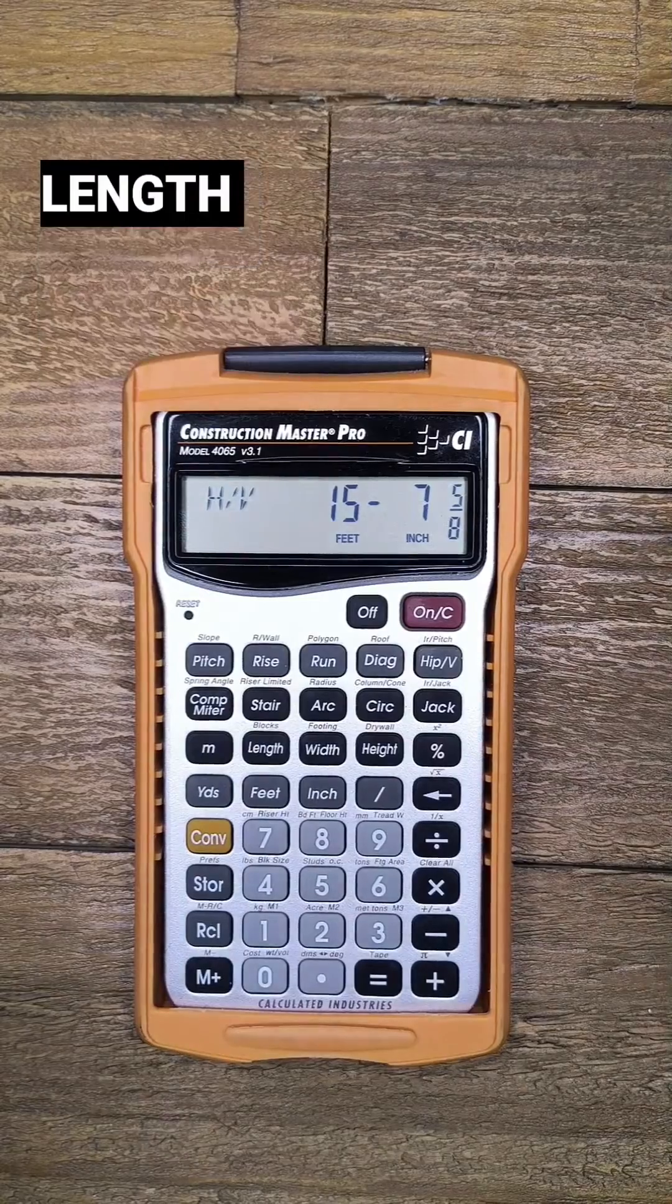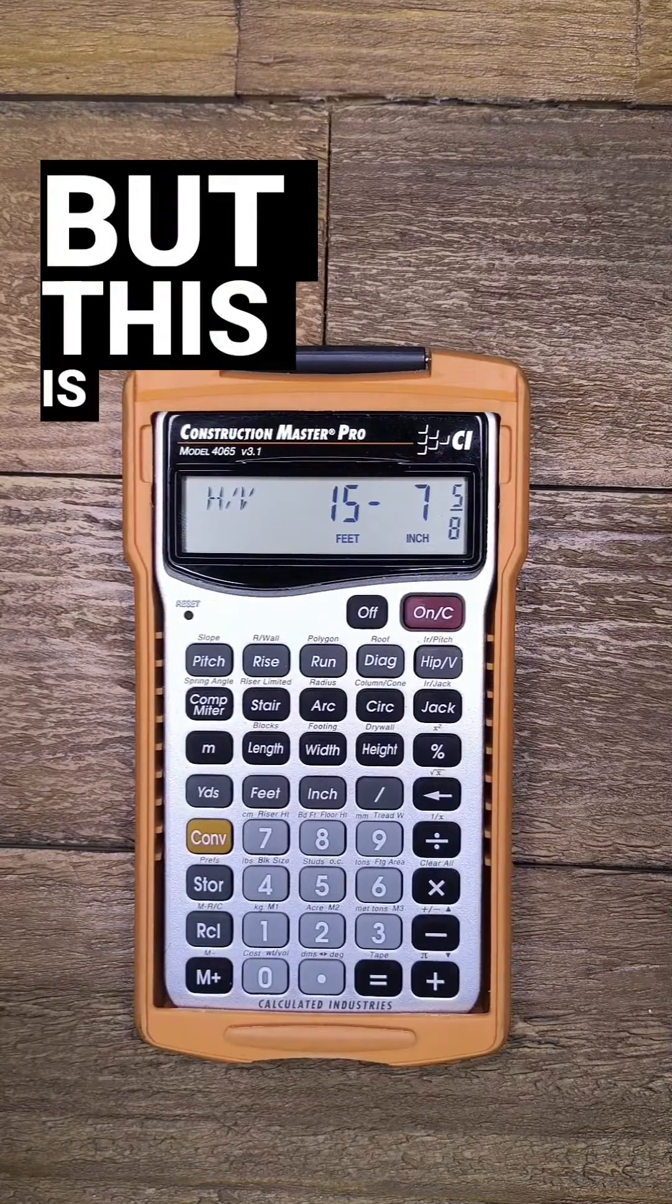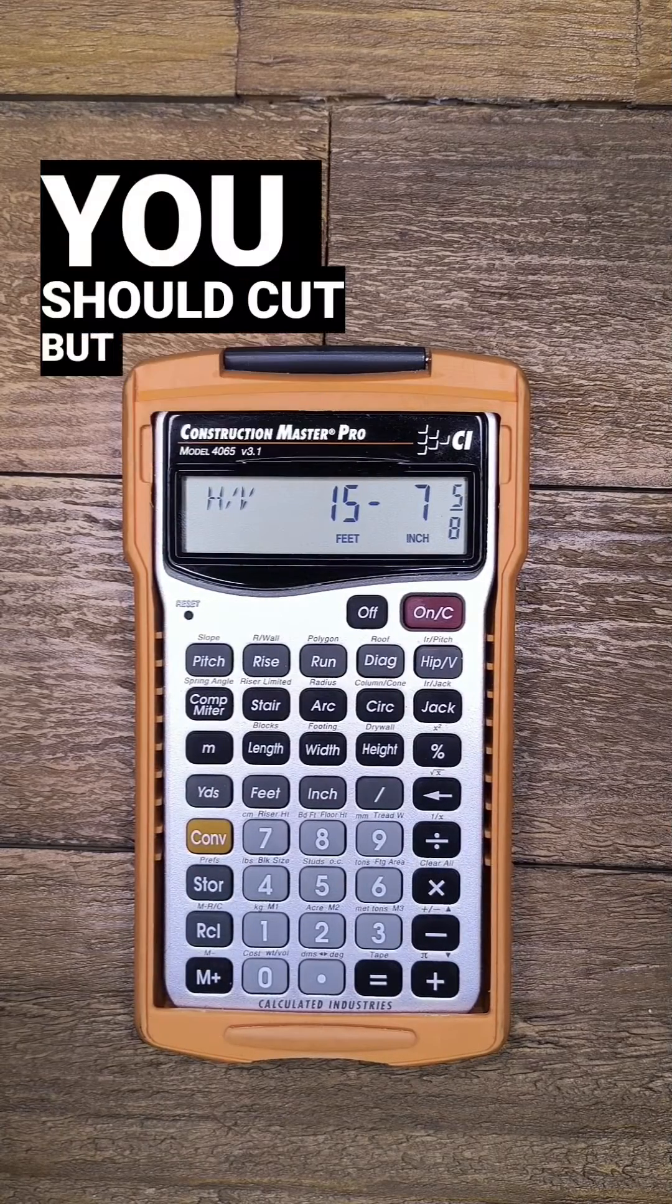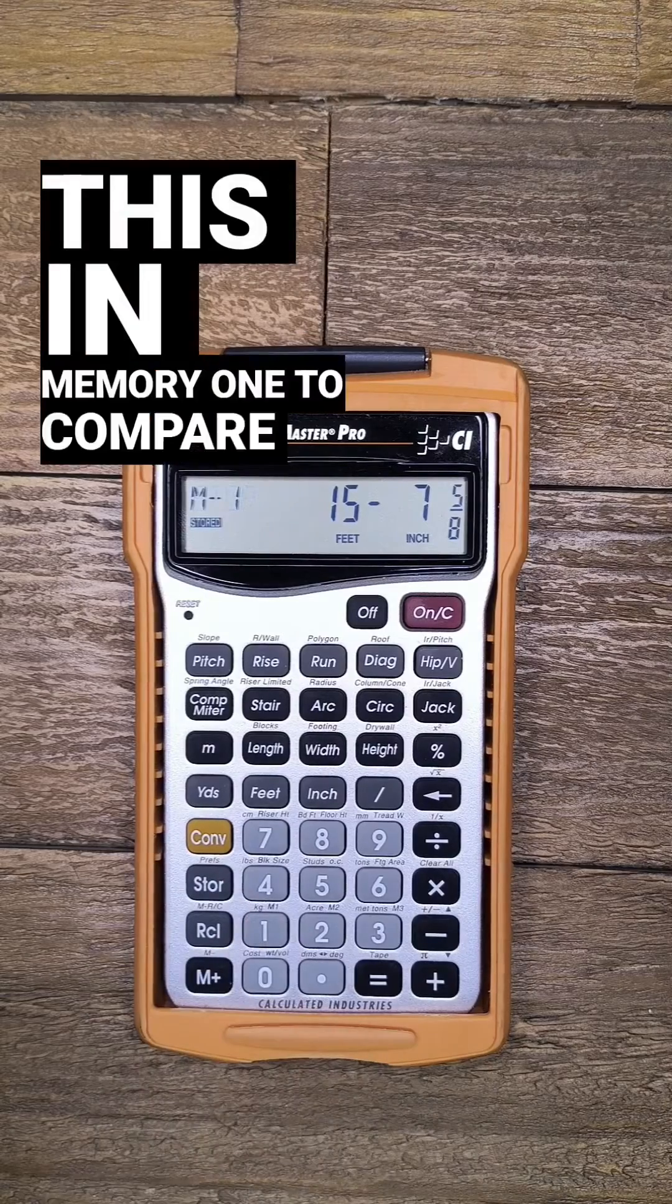Now the hip V button will show the length of the hip or valley rafter, but this is not the actual length you should cut. But let's store this in memory 1 to compare later.